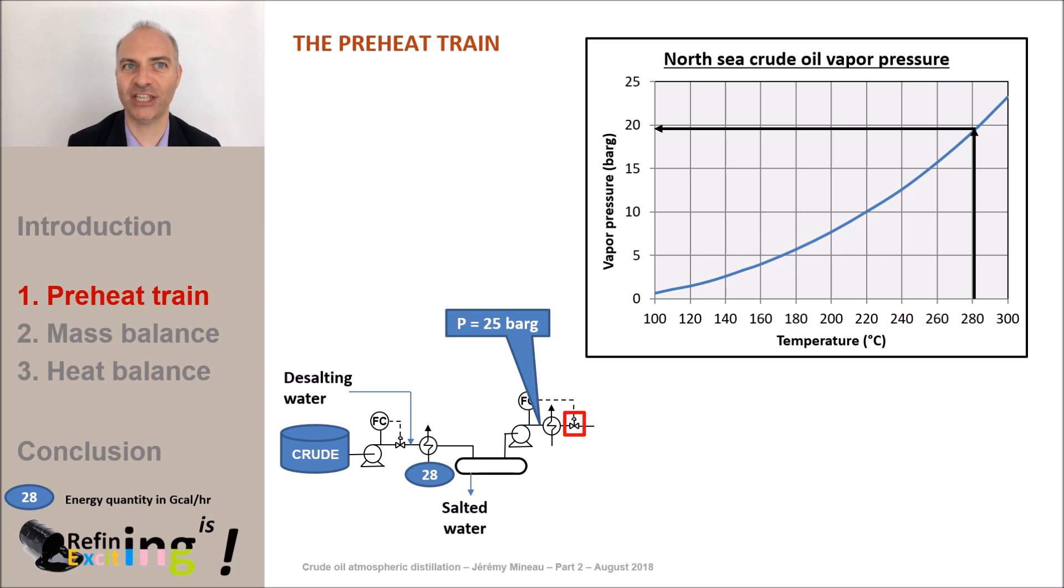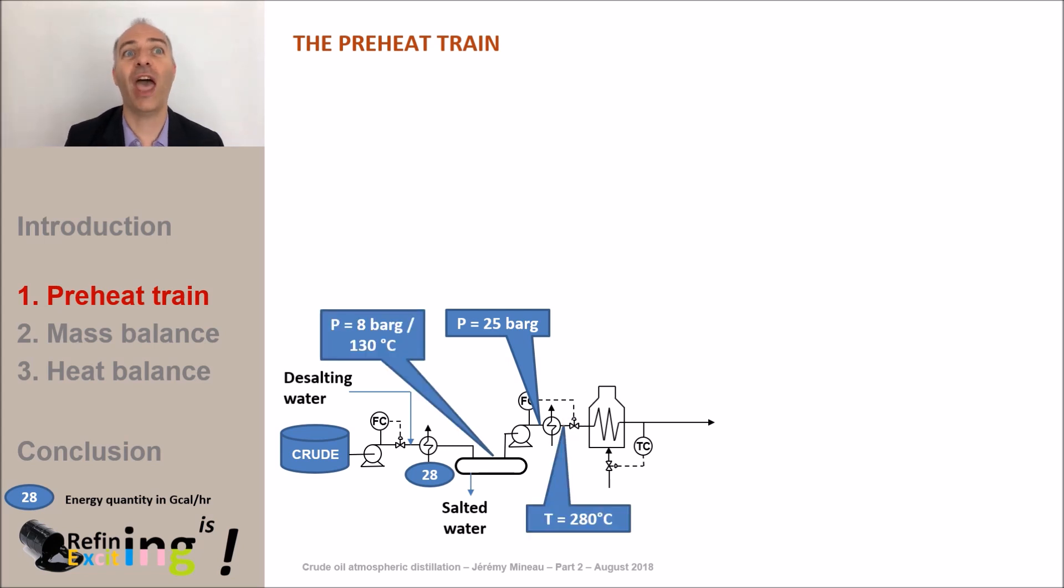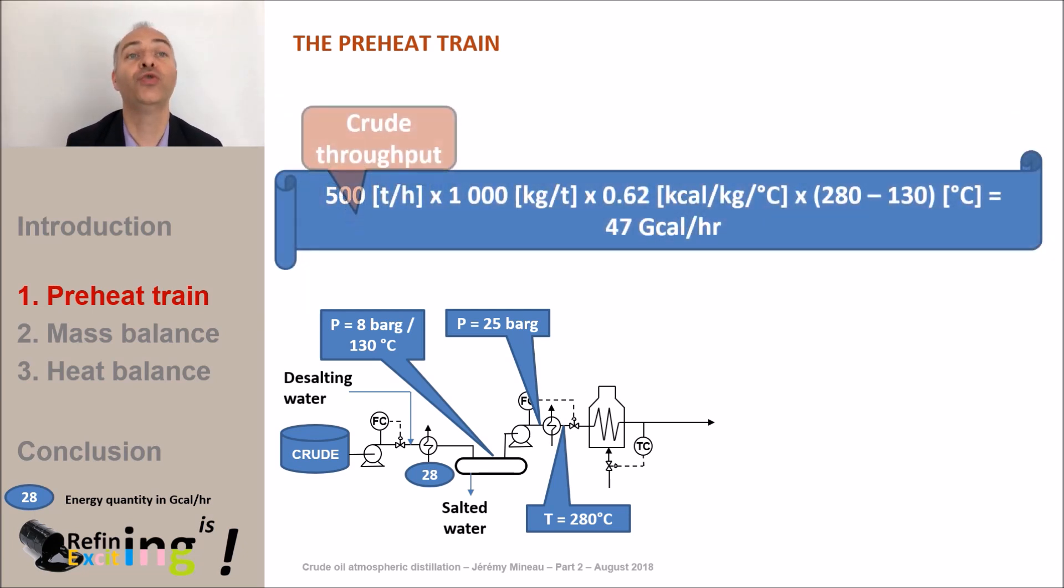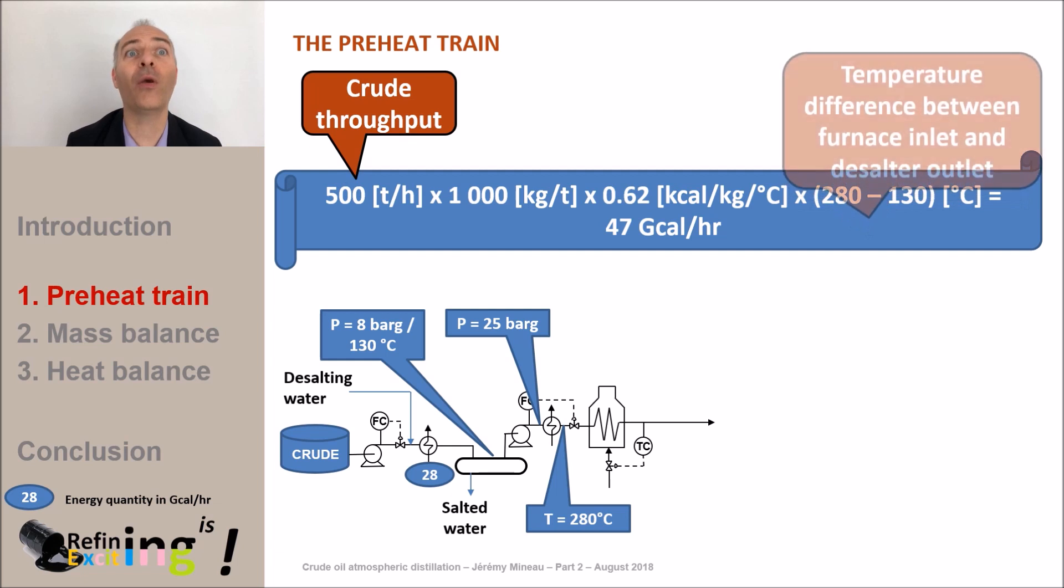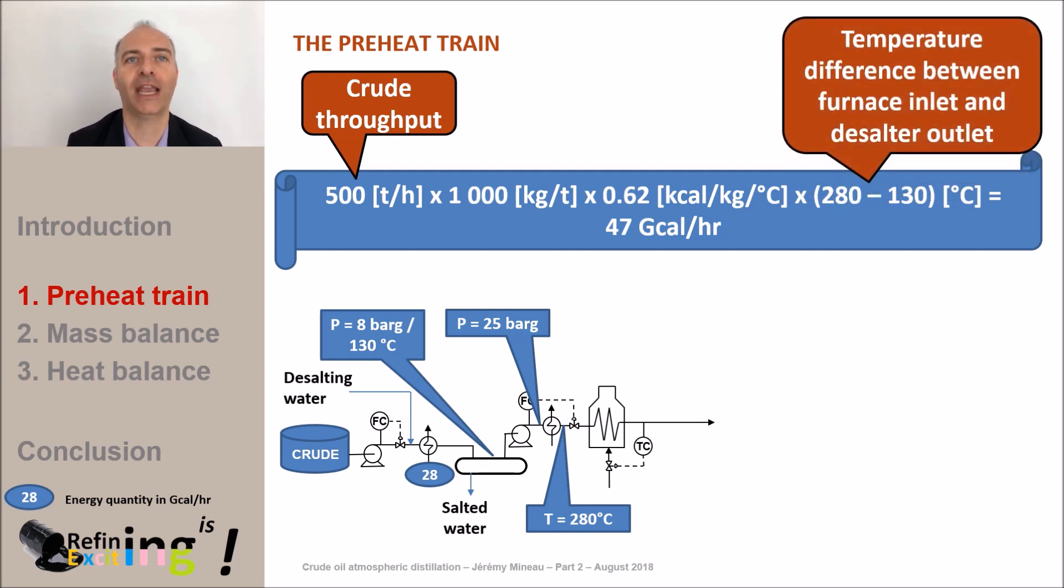Then the crude flashes in a valve just before the distillation furnace. How much energy does it require? Here again let's do a heat balance. When heating up the crude from 130 to 280 degrees C it will require about 47 gigacalories per hour. Indeed the heat capacity of the crude increases with temperature. It is no more 0.52 kilocalories per kilo per degree C that is necessary but 0.62 at this higher temperature.